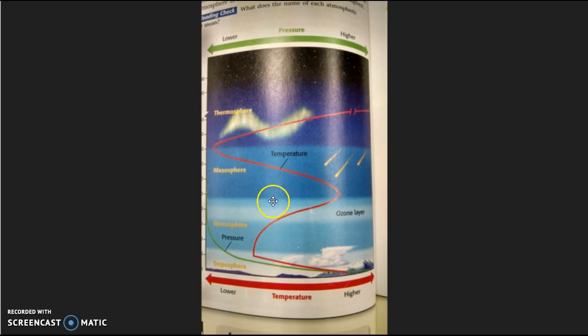Temperature decreases in the mesosphere with height just like we expect, as it does in where we live in the troposphere. But in the thermosphere it does the same thing as in the stratosphere. It increases the taller we go in the thermosphere. This video is going to explain why that happens.